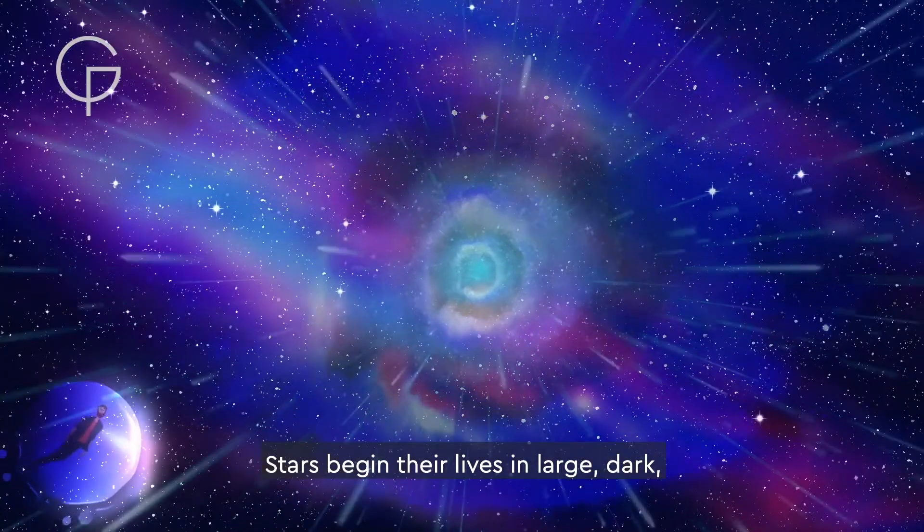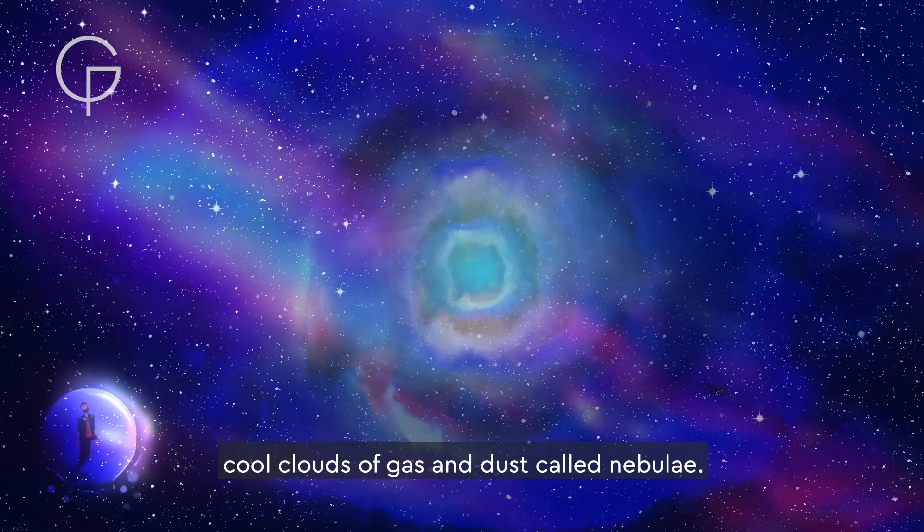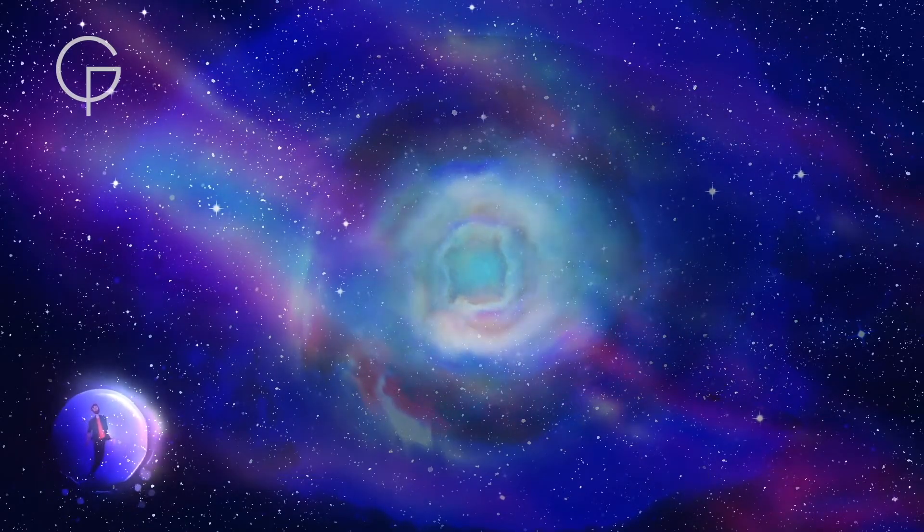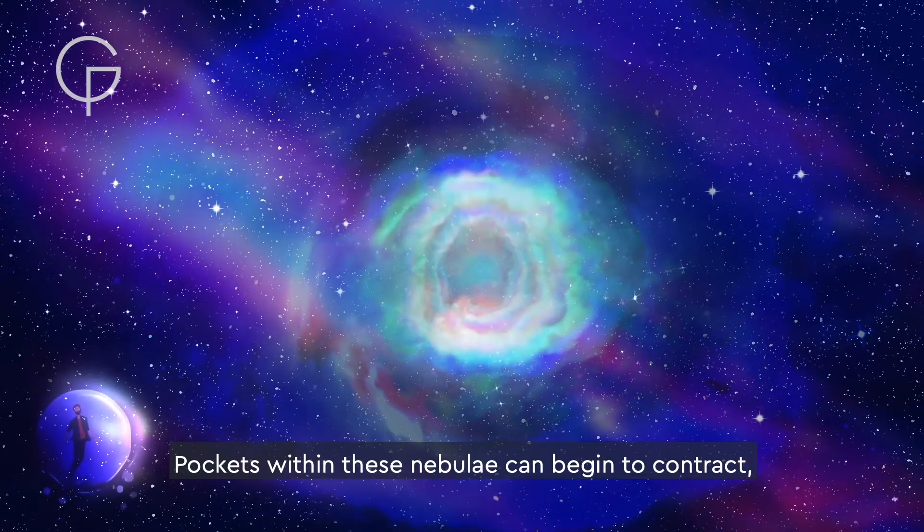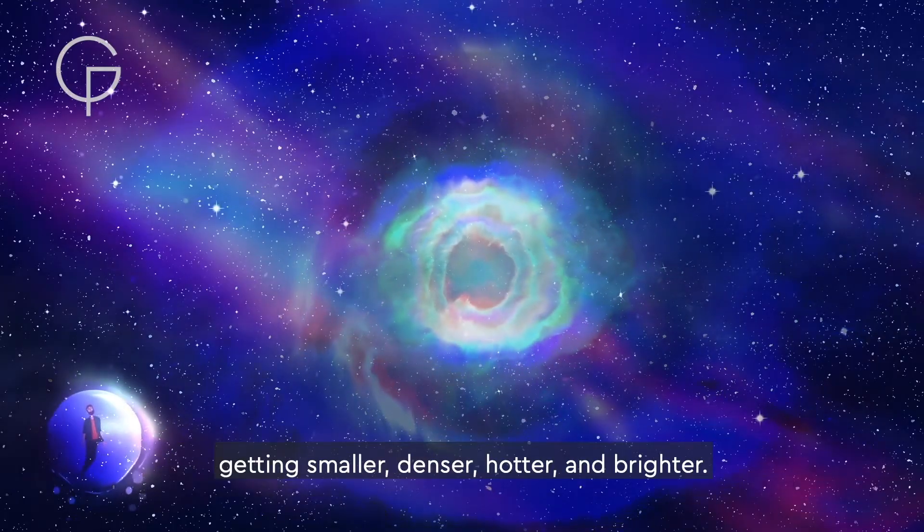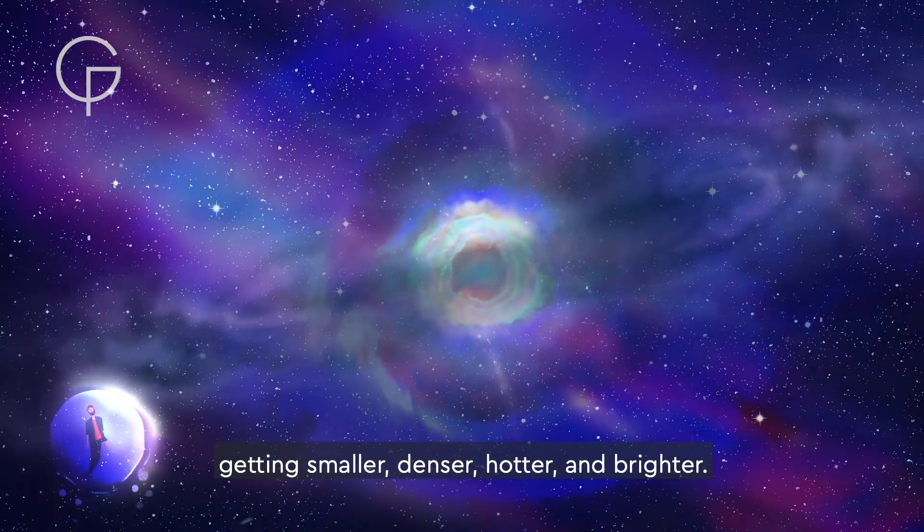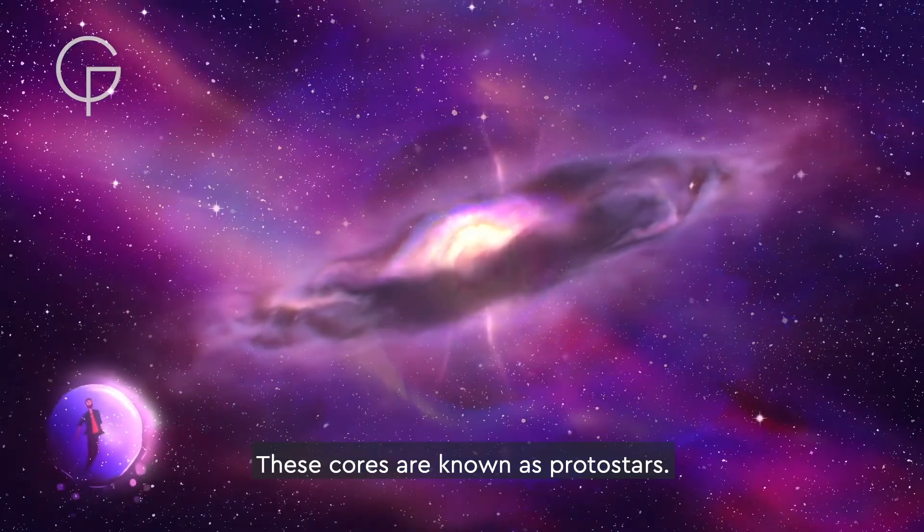Stars begin their lives in large, dark, cool clouds of gas and dust called nebulae. Pockets within these nebulae can begin to contract, getting smaller, denser, hotter and brighter. These cores are known as protostars.